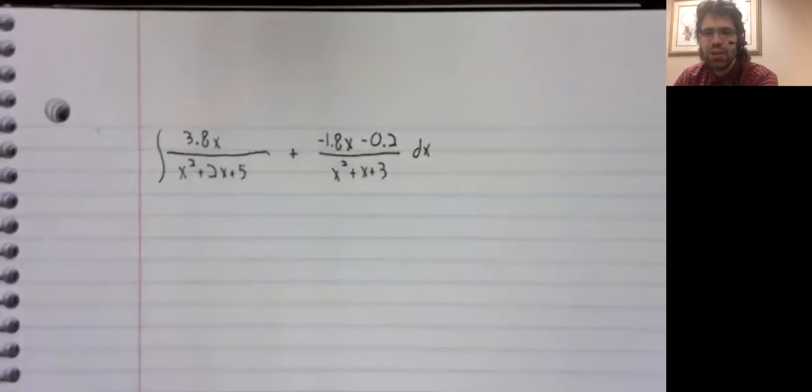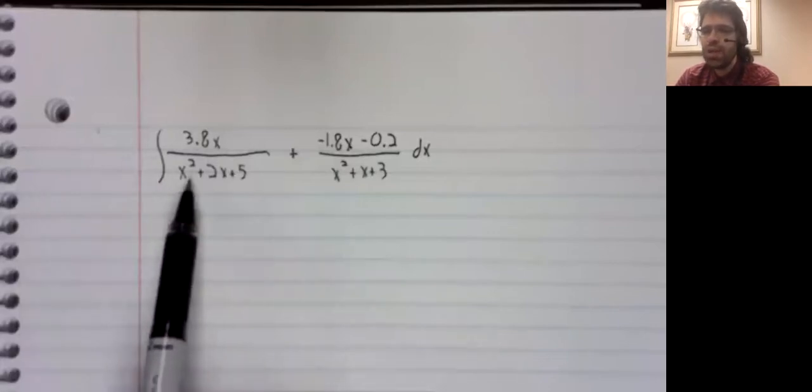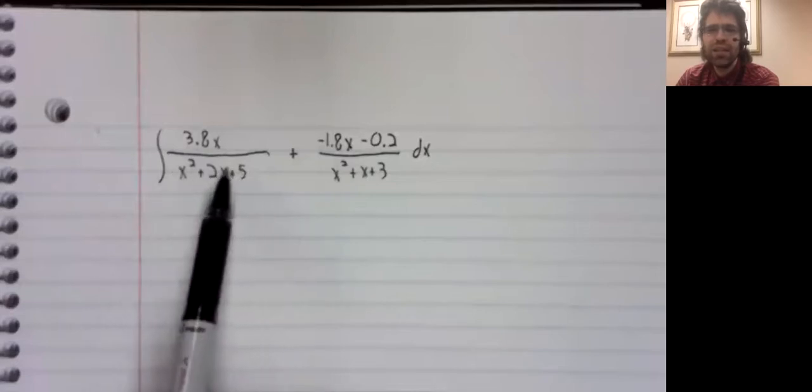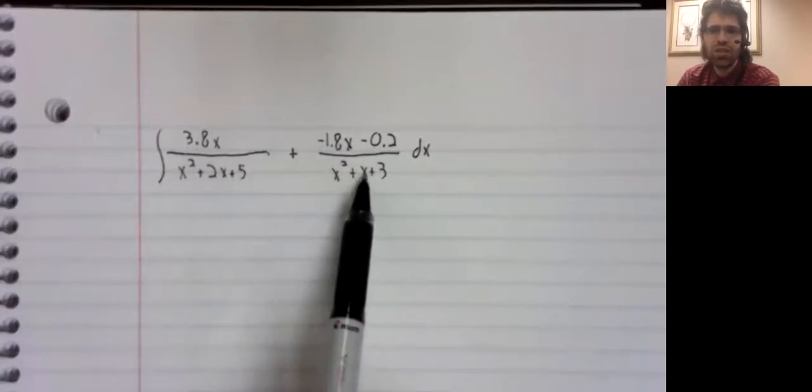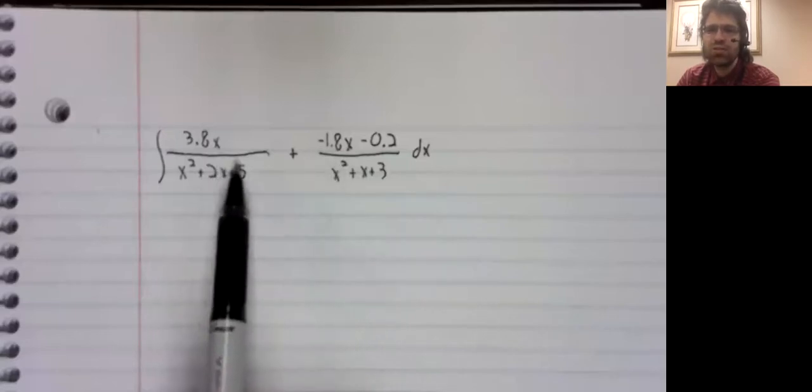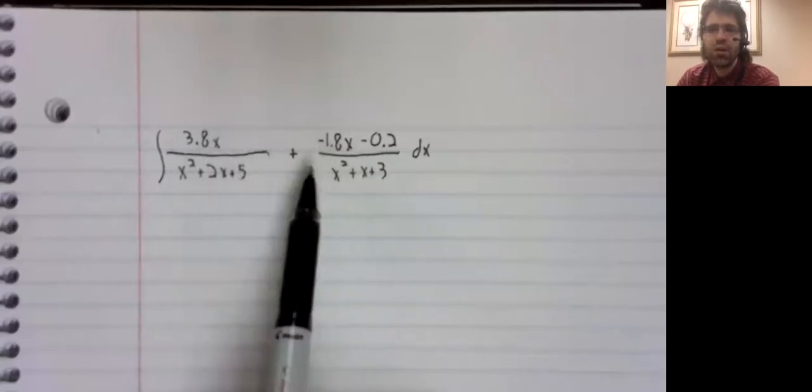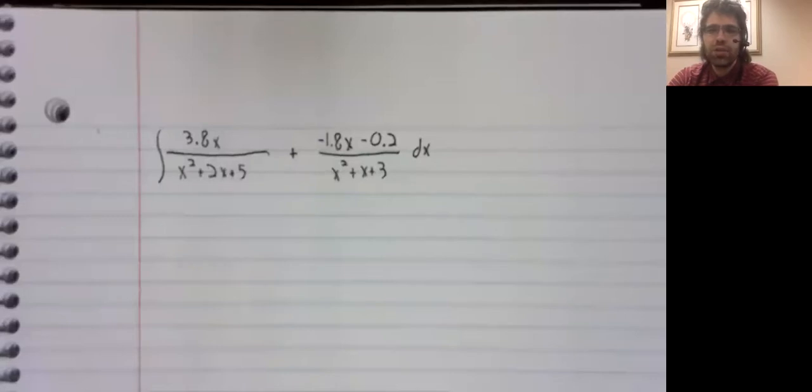I'm not saying it's absolutely impossible. Maybe if you did some trick, maybe if you completed the squares in the denominators, we could make these look like an arc tangent or something like that. But I am going to shrug and give up.